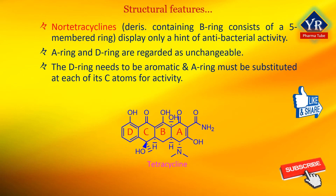The tetracyclines are elaborated through a polyketide biosynthetic pathway, and this origin is reflected by the conjugation of oxygen-based functionality along the periphery of the tetracyclic ring system. The B ring and the C ring tolerate certain subsequent changes, so long as the keto-enol system at C11, C12, C12A remains intact and conjugated to the phenolic D ring.